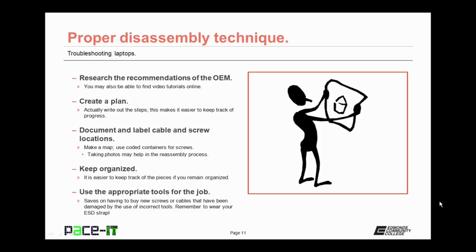Once you start, document and label cables and screw locations. Make a map. Use coated containers for the screws. Keep everything organized. It's easier to keep track of pieces if you remain organized. And remember, always use the appropriate tools for the job. Saves on having to buy new screws or cables that have been damaged by using the wrong tools.